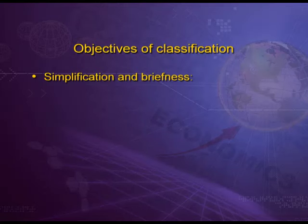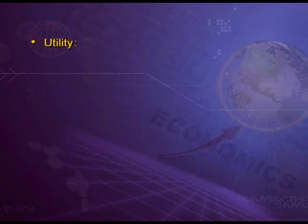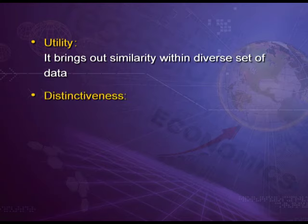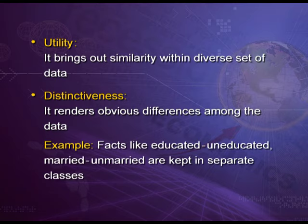The objectives of classification are as follows. The first objective is simplification and briefness — it makes data brief and simple. For example, data collected during a population census has to be classified according to age, sex, marital status, and occupation. The second objective is utility — it brings out similarity within a diverse set of data by making it more useful. The third important objective is distinctiveness — it renders obvious differences among the data; for example, facts like educated or uneducated, merit or unmerit, can be kept in separate classes.